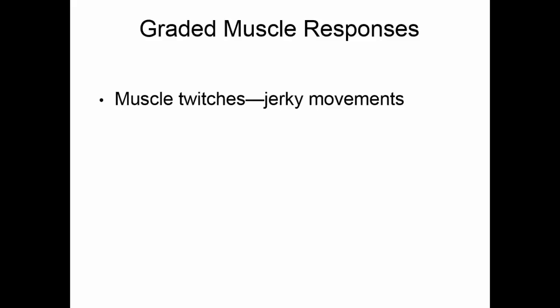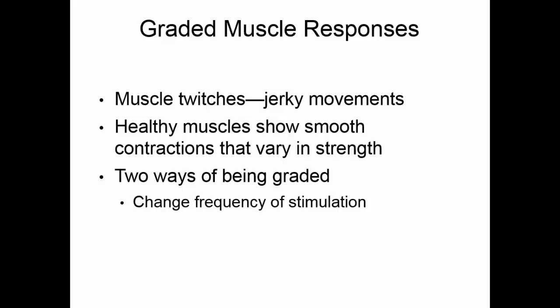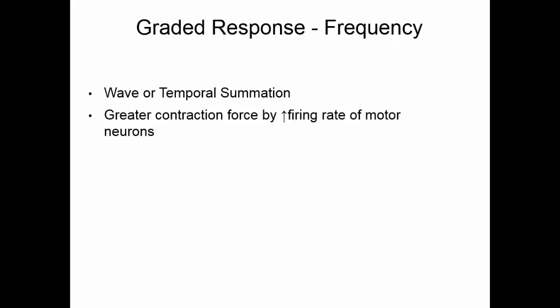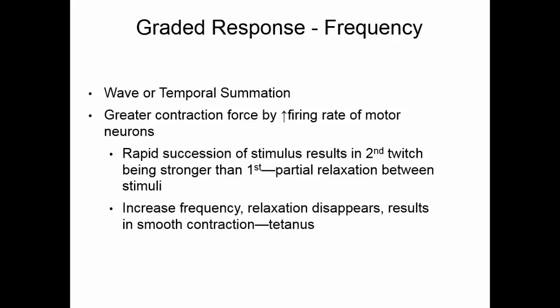If muscles only worked by muscle twitches, all of our movements would be very jerky, but healthy muscles show nice, smooth contractions that vary in strength — these are called graded muscle responses. There are two ways that muscle responses can be graded: by changing the frequency of stimulation or by changing the strength of the stimulation. Graded responses that involve changing frequency use wave or temporal summation — we increase contraction force by increasing the firing rate of the motor neurons. Rapid succession of stimuli results in a second twitch that's stronger than the first, with some partial relaxation in between. If we continue to increase the frequency until there is no relaxation, we have a smooth muscle contraction referred to as tetanus.